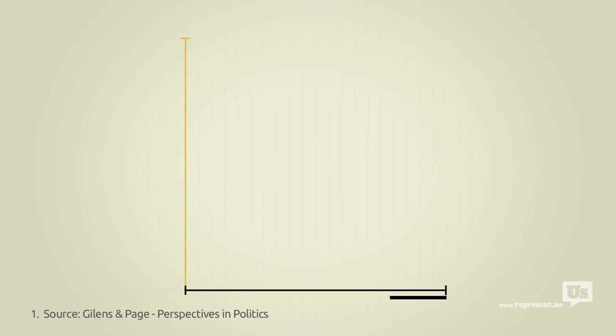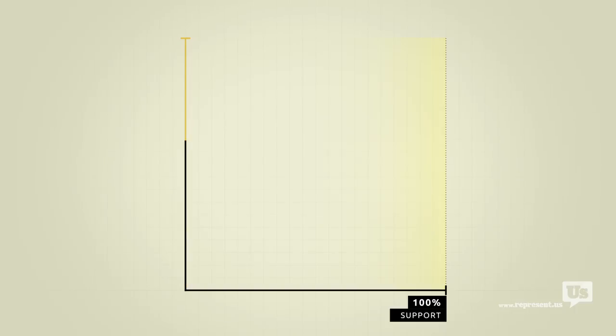This axis here represents public support for any given idea. On the left at 0% are ideas that not a single American wants. On the right at 100% are ideas that everyone supports. This axis represents the likelihood of Congress passing a law that reflects any of these ideas, from a 0 to a 100% chance.